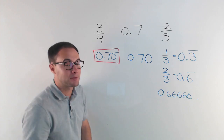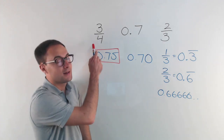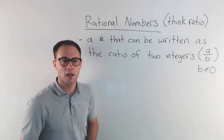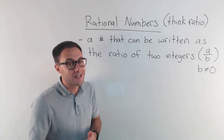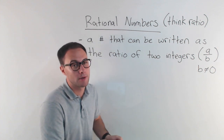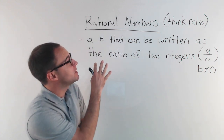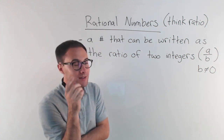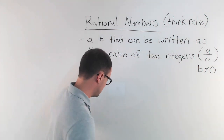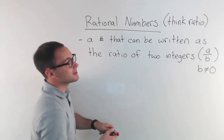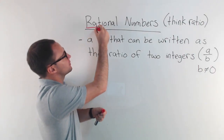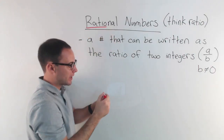So if you have the option, take three-fourths of a cookie. Now let's talk about what rational numbers are. When you see rational numbers, think ratio — it's right in the word. Rational — the first part is ratio.